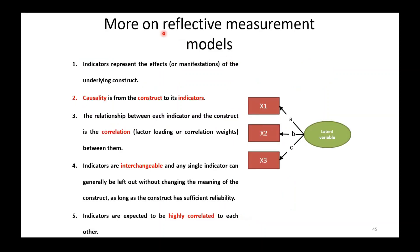Let's look at the characteristics of reflective measurement models. There are five points to consider. Number one: indicators or items of the questionnaire represent the effects or manifestations of the underlying construct. Number two: causality runs from the construct to the indicators — the latent variable causes the items. Number three: the relationship between each indicator and the construct is the correlation between them, with values a, b, and c also called factor loadings or correlation weights.